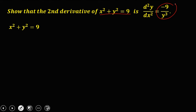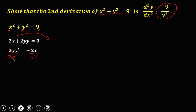First we need to get the first derivative using implicit differentiation. The derivative of x² is 2x, the derivative of y² is 2y·y', and the derivative of the constant is zero. Transposing 2x to the right gives negative 2x, then dividing both sides by 2y, y' equals negative 2x over 2y, which reduces to negative x over y.